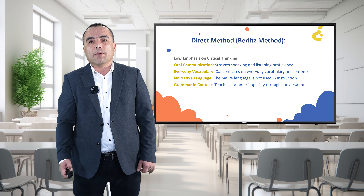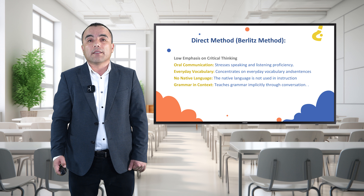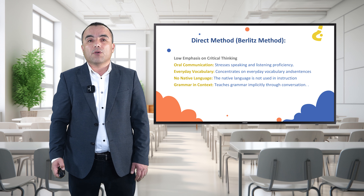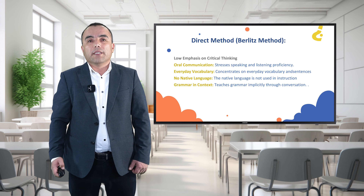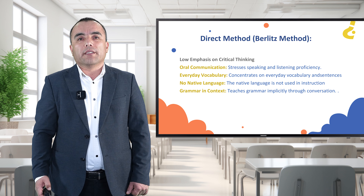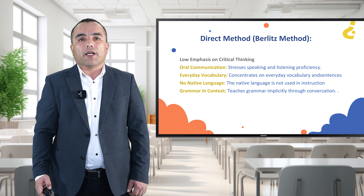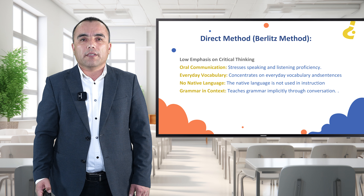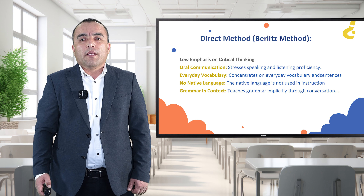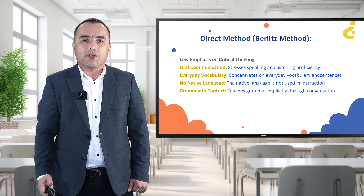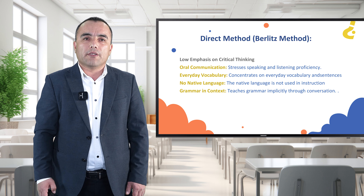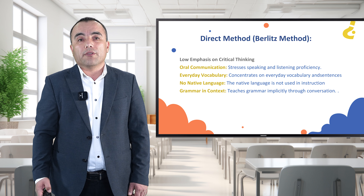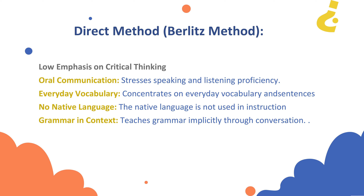One of the main rules of the direct method is no native language usage and total immersion — conducting the entire lesson exclusively in the target language. This involves employing visual aids like pictures and gestures to convey meaning without resorting to translation. Educators can also use language games where only the target language is permitted, such as Simon Says. Grammar is taught in context through conversational drills practicing specific grammatical structures through guided instruction. Error correction involves teachers correcting grammatical errors subtly during natural conversations, and repeating and practicing sentence structures that introduce new grammar within a meaningful context.